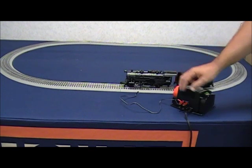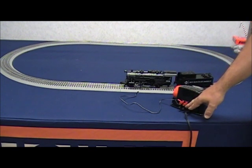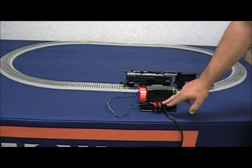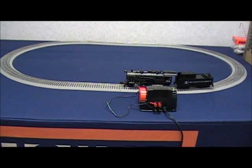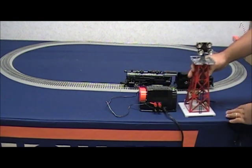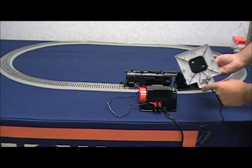Now I'd like to take a moment and cover the accessory outputs on the CW-80. Your CW-80 is equipped with two terminals for accessory outputs. We have here an animated accessory which is nothing more than a light tower with two wires connected underneath.